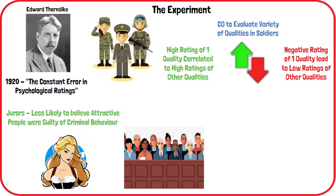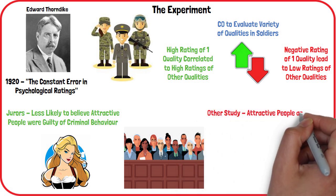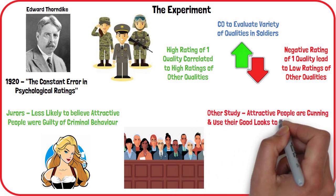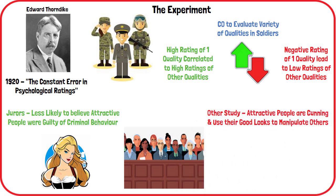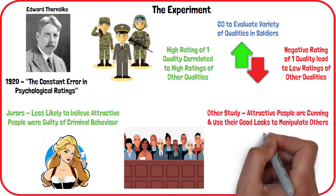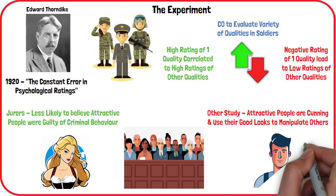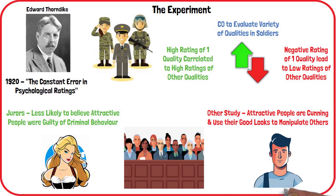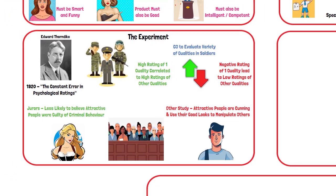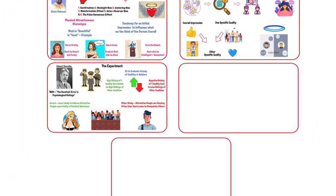Other studies have found that while people are more likely to ascribe a host of positive qualities to attractive people, they are also more likely to believe that good-looking individuals are vain, dishonest, and likely to use their attractiveness to manipulate others.